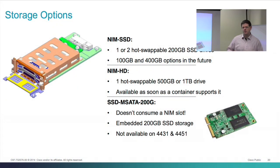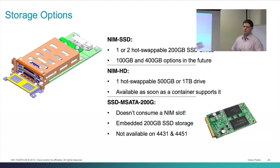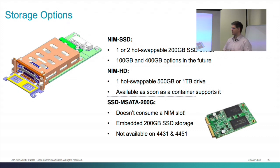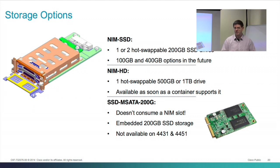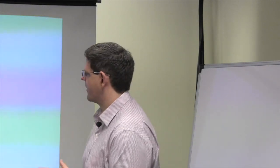There are several storage options inside the system. We don't include storage for services by default, since it doesn't make sense to add that cost for everyone. Options include an SSD carrier card that fits in a NIM slot and can take one or two SSD drives, plus a hard drive variant that's ready but not yet shipping since Cisco Woz only supports SSDs. On the 4300 series, if you don't want to use a NIM slot, there's an internal 200-gig eSATA card via an mSATA socket on the board.